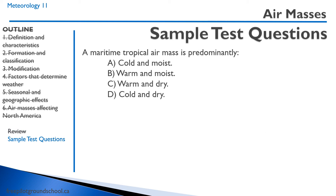Sample question: A maritime tropical air mass is predominantly — A, cold and moist; B, warm and moist; C, warm and dry; D, cold and dry. Maritime means it's going to be moist, and tropical means it's going to be warm. So the correct answer is B, warm and moist.